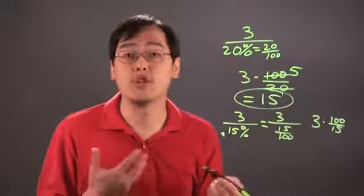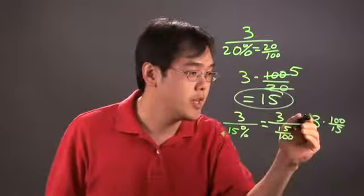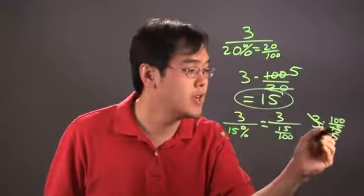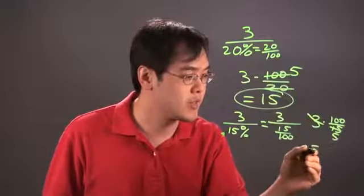What you want to do is, again, reduce as much as you can to keep it simple. So 3 and the 15 reduces. There's going to be a 5 left over. So 100 divided by 5, that's going to give you 20.